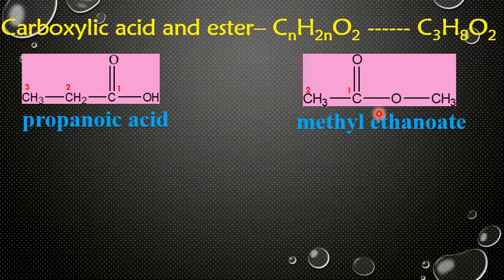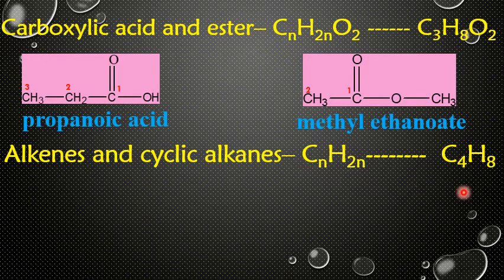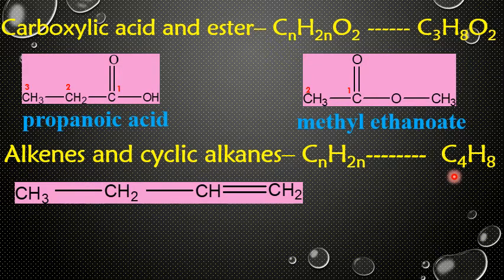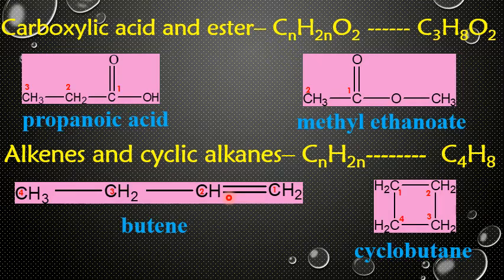As the final example, let's take alkenes and cyclic alkanes. The common molecular formula of alkenes is CnH(2n). Considering the molecule C4H8, we can draw an alkene and a cyclic alkane. In butene, the functional group is an alkene double bond, but in cyclobutane only single bonds are present in the structure.